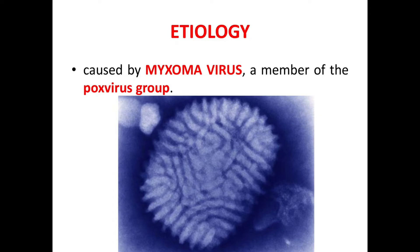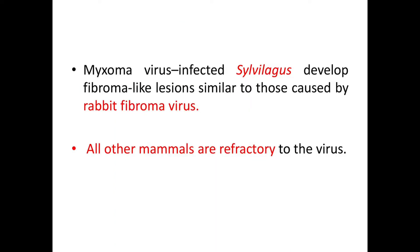Now let's see the etiology. The disease is caused by myxoma virus, a member of the poxvirus group. Myxoma virus infected Sylvilagus develop fibroma-like lesions similar to those caused by rabbit fibroma virus. All other mammals are refractory to the virus.